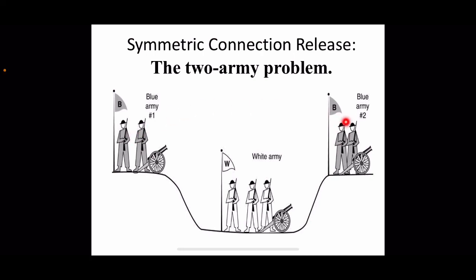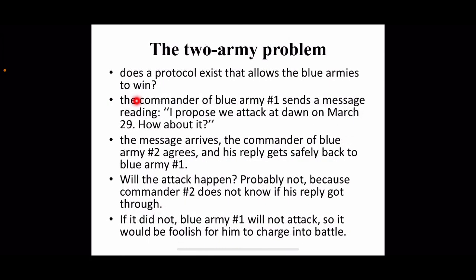How can the two blue armies synchronize their attack? Only through communication. But the channel passes through white army territory, so any message may be captured, corrupted, or lost — the communication channel between the blue armies is completely unreliable. The question is: does a protocol exist that allows the blue armies to coordinate a win? For example, the commander of blue army one sends a message: 'I propose we attack at dawn on March 29. How about it?'